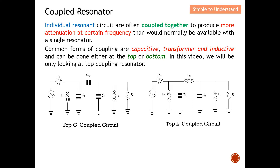Firstly, I'm going to explain why we need two resonators. Individual resonant circuits are often coupled together to form more attenuation at a certain frequency. So instead of one resonator, having two can provide more attenuation at the desired frequency. Common forms of coupling are capacitive and inductive — transformer coupling is less common — and they can be done either at the top or bottom.